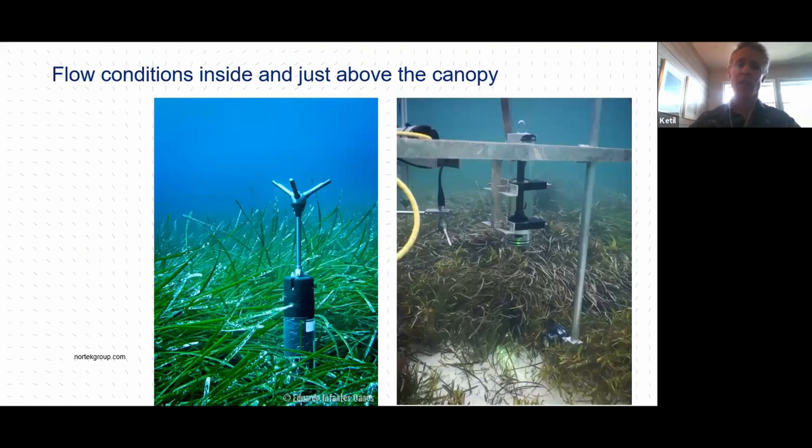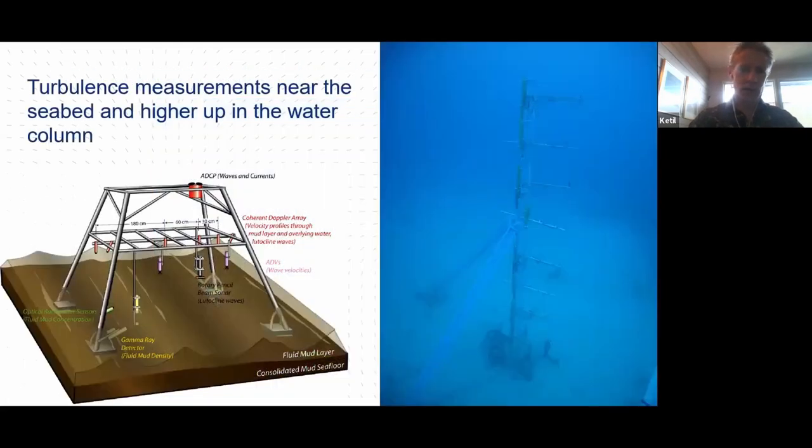Another example of how the vector is very commonly used is when measurements are made in vegetation at the seabed. So here we have two different ways the vector is oriented. One is where the probe is upwards measuring the speed of the water just above the canopy. And in the other example, we have the probe oriented downwards to measure inside of the canopy.